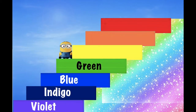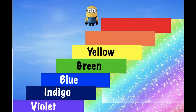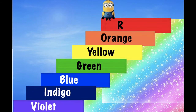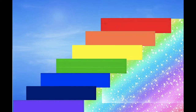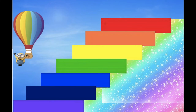The seven VIBGYOR colors of the rainbow are: violet, indigo, blue, green, yellow, orange, and red. These are the seven VIBGYOR colors.